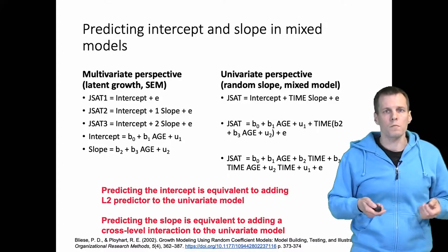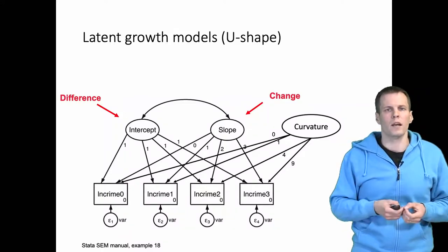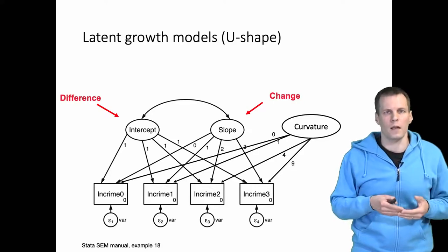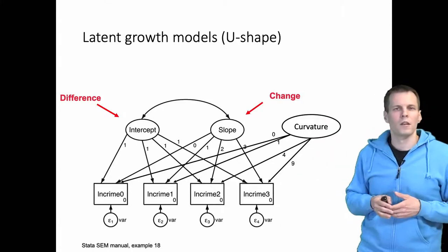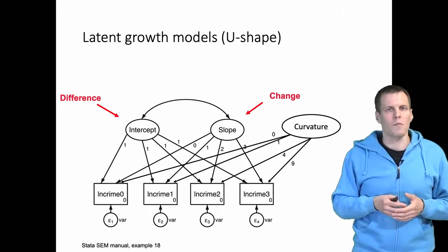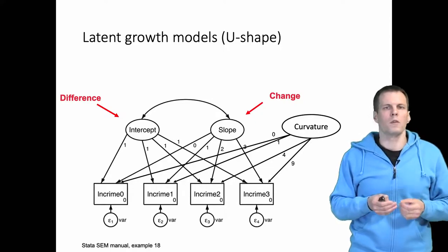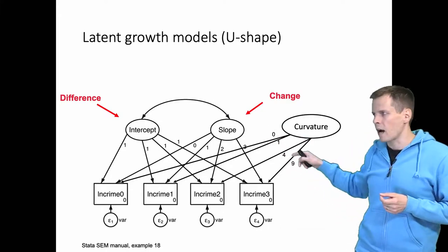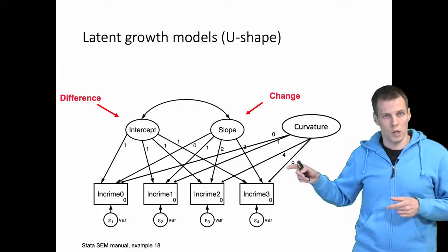Of course we can also model more complex trends. In a mixed model we can have a u-shaped effect. We can have the same u-shaped effect in the latent growth model formulation as well. For example we would have the curvature effect here, that's the squared effect of time. So time zero is zero, time one is one, time two is four, time three is nine. So we have this effect that goes down and it compensates for the slope that goes up, or it goes up steeper.